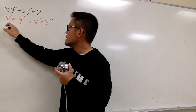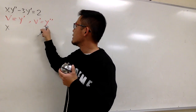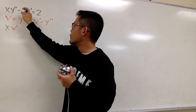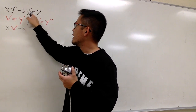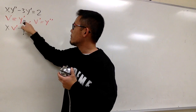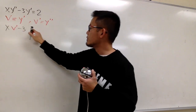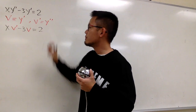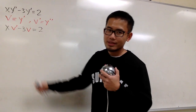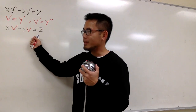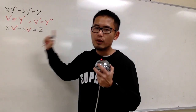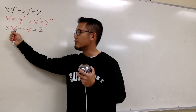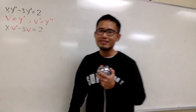Now take these ingredients and rewrite the equation as a first-order linear differential equation. We get x in the front, then phi prime, then minus 3 times phi (since y prime is now phi), and this is equal to 2. This is now a first-order linear differential equation with phi and phi prime.